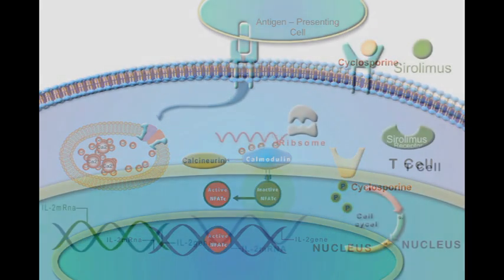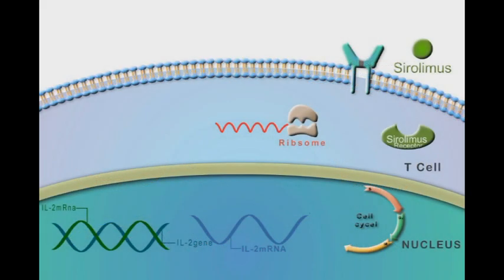Interleukin-2 mRNA moves to the cytoplasmic ribosome, where interleukin-2 cytokines are produced. Interleukin-2 molecules are released from T-cells in response to different stimuli to start a new cascade of cell-mediated immunity.